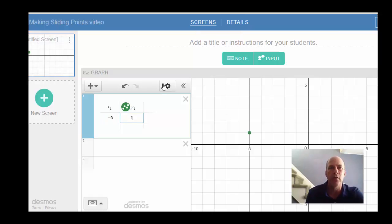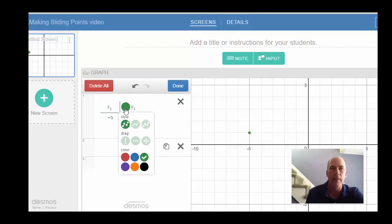To make it movable you're going to use the Settings gear. And under the Settings gear now I'm going to come to this green point. Notice the point is green. Click it and I have some options here. And the ones I'm interested in are the drag options.